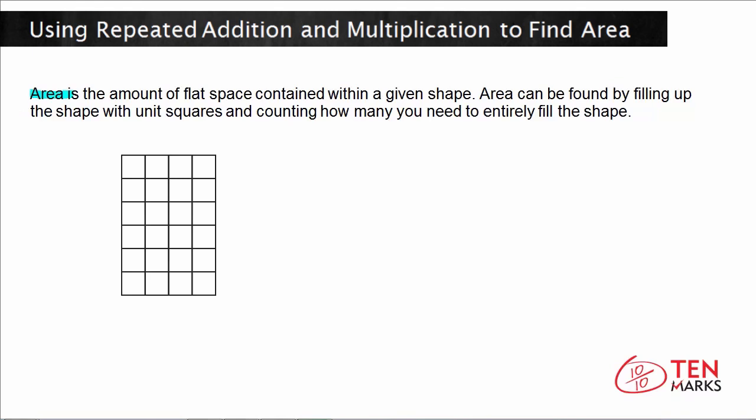So let's take a look at this rectangle I have here down below. Each square represents one unit of area. Now it depends on what these units are. Let's just say that each of these squares is made up of one centimeter side — so it's one centimeter by one centimeter. This is a one centimeter square.